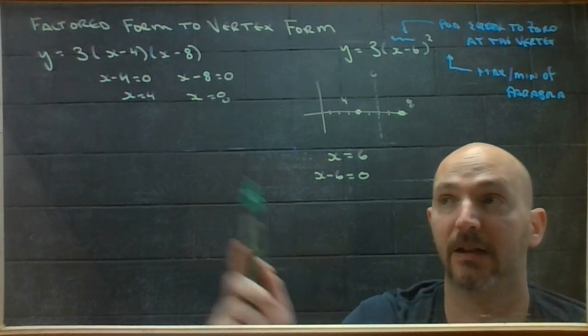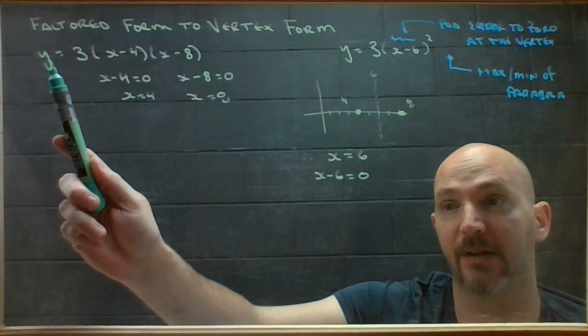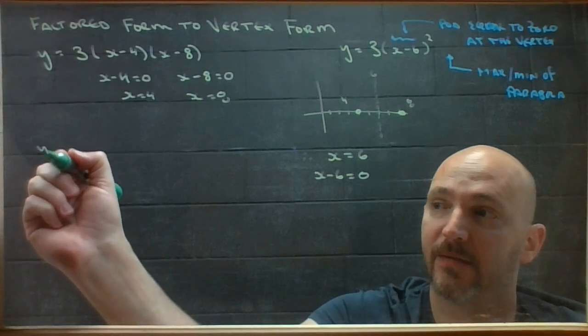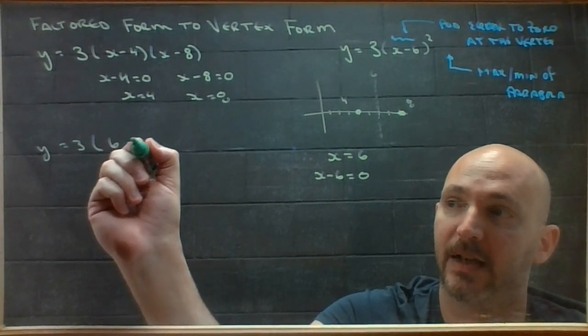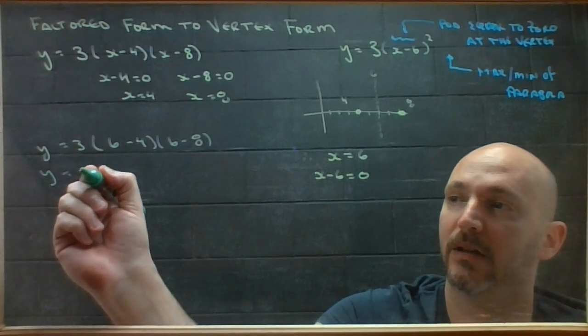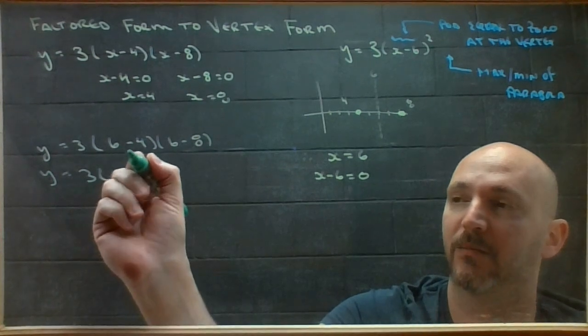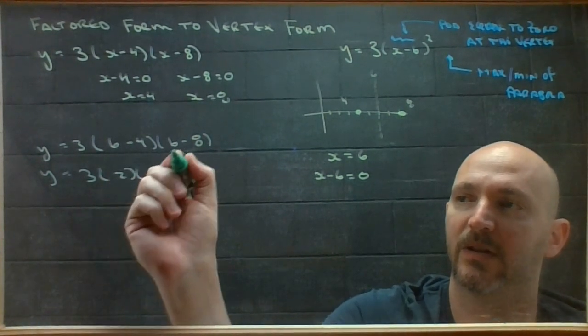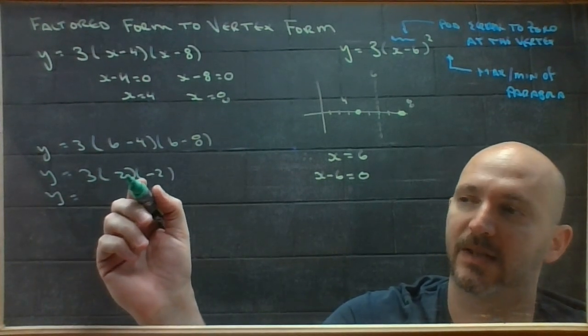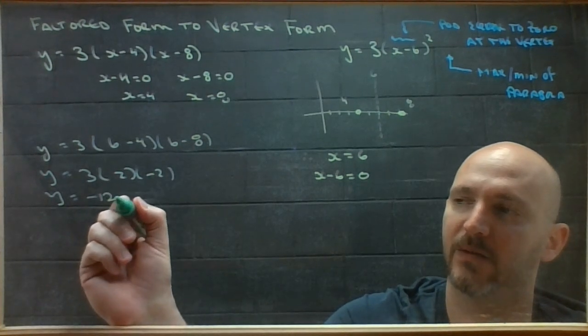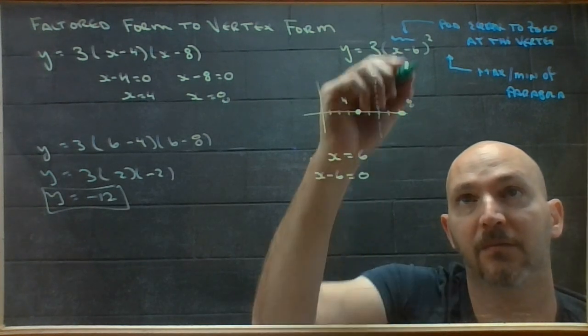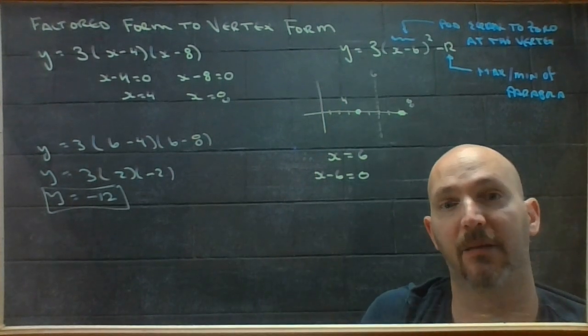And now I just need to find the maximum value of the parabola. Well, fortunately, I have an equation that spits out y values if you know an x. So if I take this factored form and I evaluate it when x is 6, I end up with 3 multiplied by 6 minus 4 is 2, 6 minus 8 is negative 2, 3 times 2 is 6, 6 times negative 2 is negative 12. So that will be the y value of my vertex. I just have to park that in, and I'm good to go.